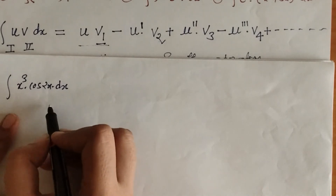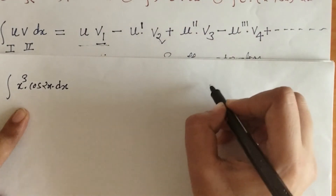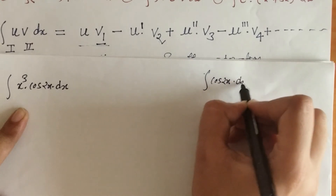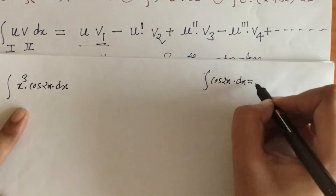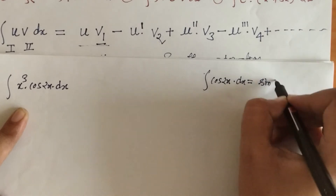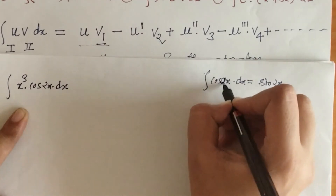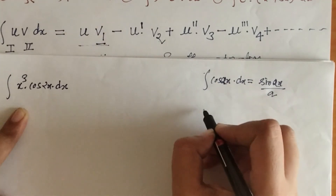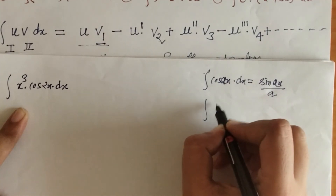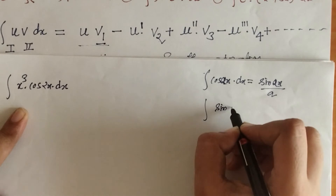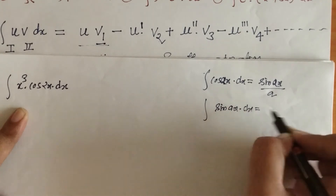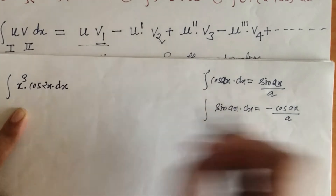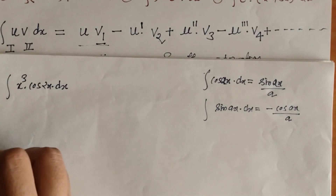Now we have to evaluate this integral — for this we will need: the integration of cos(2x) is sin(2x)/2. In general, the integration of sin(ax) is −cos(ax)/a. So we have to evaluate this integral using these formulas.